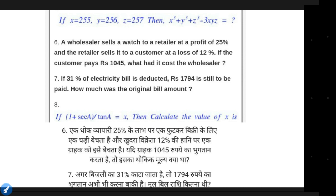This formula is (x plus y plus z) multiplied by (x² plus y² plus z² minus xy minus yz minus xz). So this formula is what you use. If you have a question, you put the values in and you will get the answer.